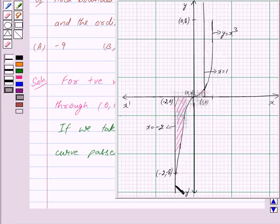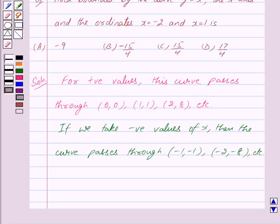Now, here we shall remember that we will take the absolute value of the area of the region below the x-axis. Therefore, required area equals the integral from -2 to 0 of x³ dx, plus the integral from 0 to 1 of x³ dx.